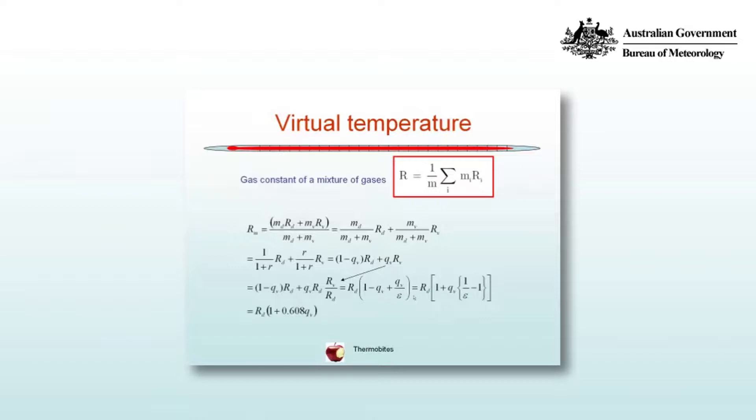Let's derive the specific gas constant for moist air. We can write that as the mass weighted mean of the contributions of the different constituents in terms of their specific gas constants. So you can see the sum in the red box.